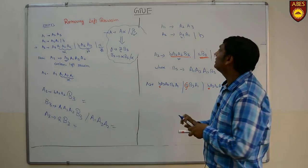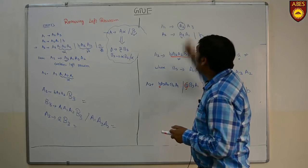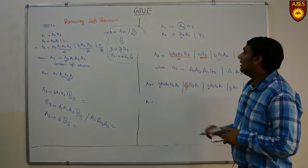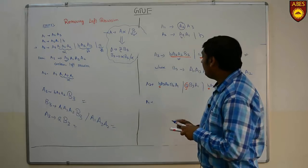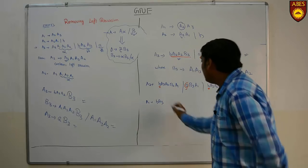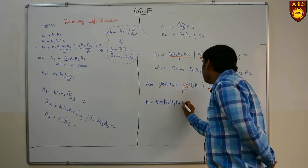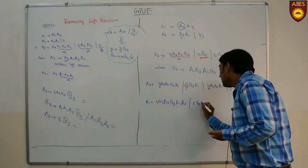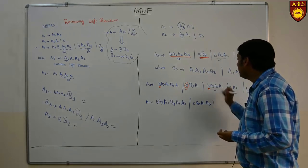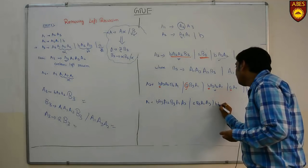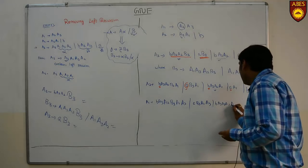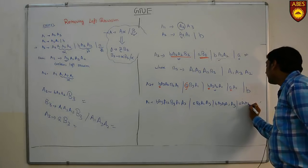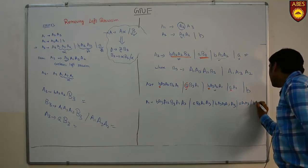Now we will use this value of A2 and substitute it in A1, since A1 is having A2 A3. Substituting the value of A2 in place of A2, we get: B A3 A2 B3 A1 A3, B A3 A2 A1 A3, AB3 A1 A3, and B A3 A2 A1 A3, and if we put B in place of A3 we get B A3.